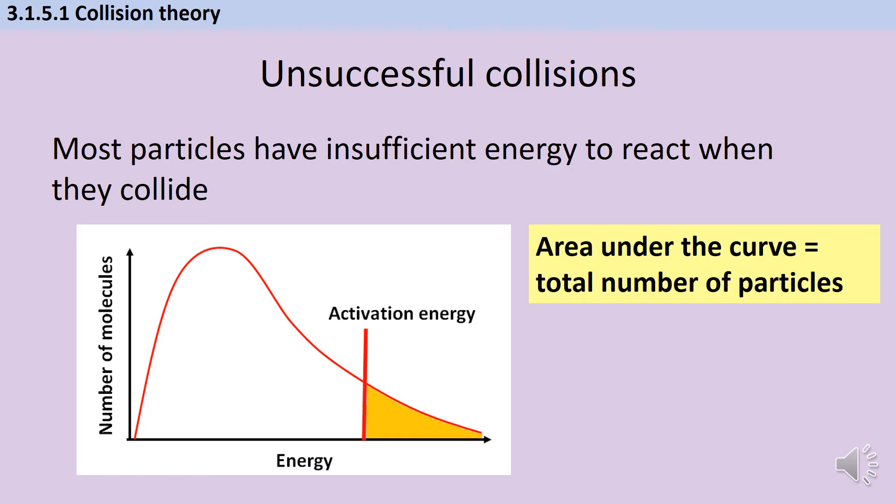So any particles in the orange segment are able to react but all of the particles in the white segment will be unsuccessful if they collide and as you can see from this distribution the vast majority of particles are in that area where they can't react because the vast majority of the area under the curve is to the left of the activation energy line not to the right.